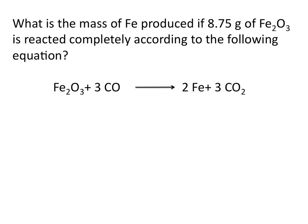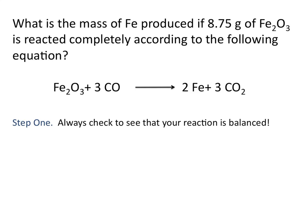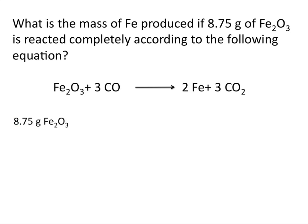So let's try an example. What is the mass of iron produced if 8.75 grams of Fe2O3 is reacted completely according to the following equation? Again, our first step is always to double check to make sure that your reaction is balanced. In this case it is. Then we'll start with 8.75 grams of Fe2O3.